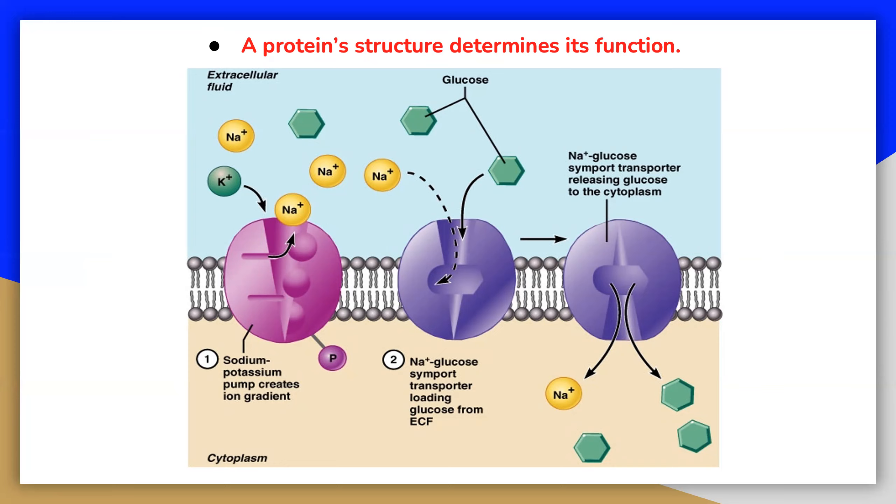The significance of the unique sequence or order of amino acids is that it dictates the three-dimensional conformation the folded protein will have.